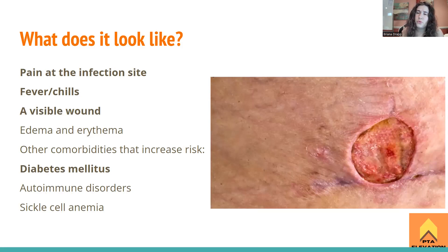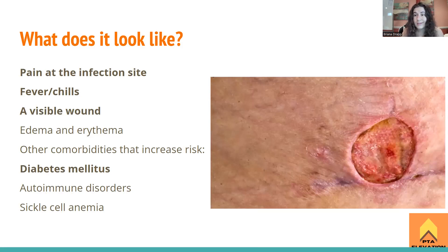A visible wound is another thing we would commonly see, especially with the secondary type of osteomyelitis. If the staph bacteria get through the skin, we're having a lot of problems — that's why we have to be careful about not letting any infections in. Edema and erythema — redness and swelling at the area — also make sense as an infection. These are among the five cardinal signs of infection: redness, swelling, warmth, and related signs.